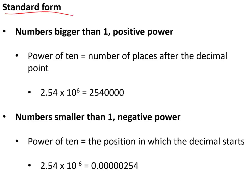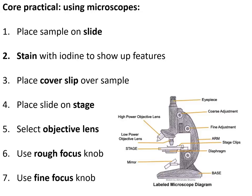Standard form is a way of representing numbers that are very big or very small. For example, 2.54 × 10⁶ — that six tells you how many places you move after the first number. Numbers smaller than one have a negative power, for example ×10⁻⁶. The power tells you which decimal place you start writing your number on — starting on the sixth place because it's ×10⁻⁶.